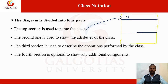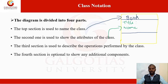For example, take the class 'Book'. 'Book' is the class name in the top compartment. In the second compartment, we list the attributes of the class Book: title, name of the author, version, and cost — four different attributes for the book.